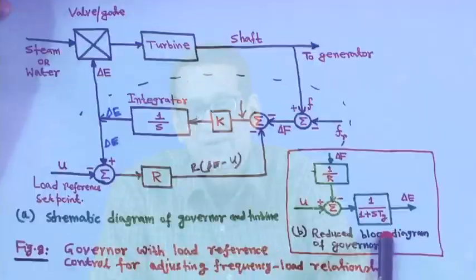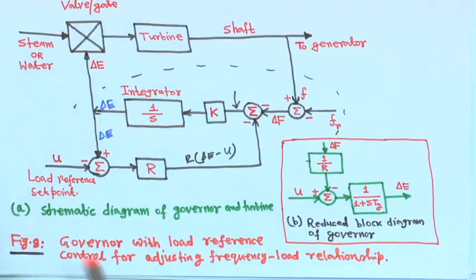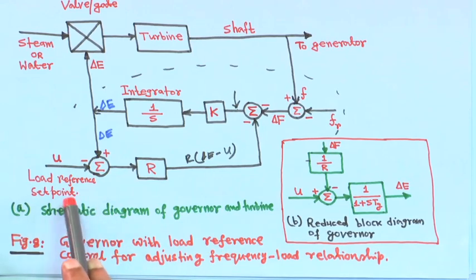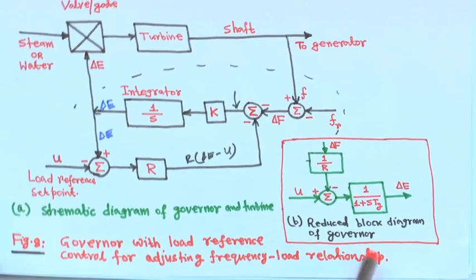This is the schematic diagram and the reduced block diagram of the governor only. The turbine generator will be covered later, and this is figure 8. It is actually the governor with load reference control for adjusting the frequency-load relationship.